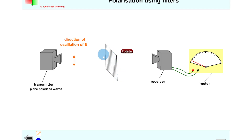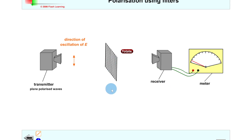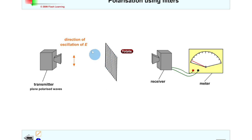When the metal wires on the grill are positioned parallel to the direction of the electric field oscillation, we get a weak microwave signal detected. Whereas if we rotate the grill so that the metal wires are perpendicular to the direction of the electric field oscillations, then we should get back to a strong signal.